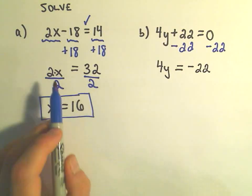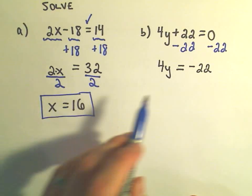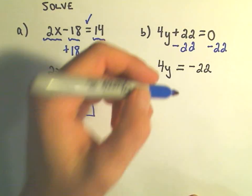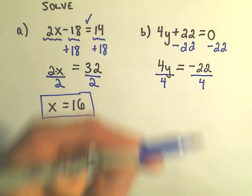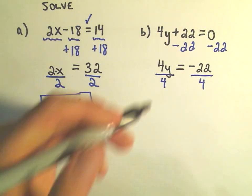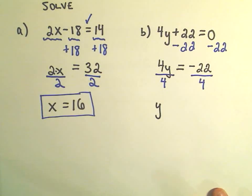And again, now the same thing. Over here, we were multiplying by 2, so we divided by 2. Well, now I'm multiplying by 4, so what I'm going to do is divide both sides by 4. And 4 divided by 4 would simply give us 1y. We typically don't write the 1.